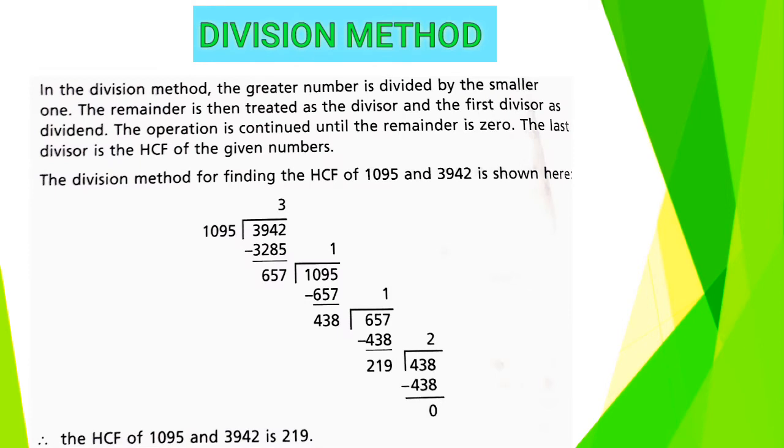In the division method, the greater number is divided by the smaller one. The remainder is then treated as the divisor and the first divisor as dividend. The operation is continued until the remainder is zero. The last divisor is the HCF of the given numbers.